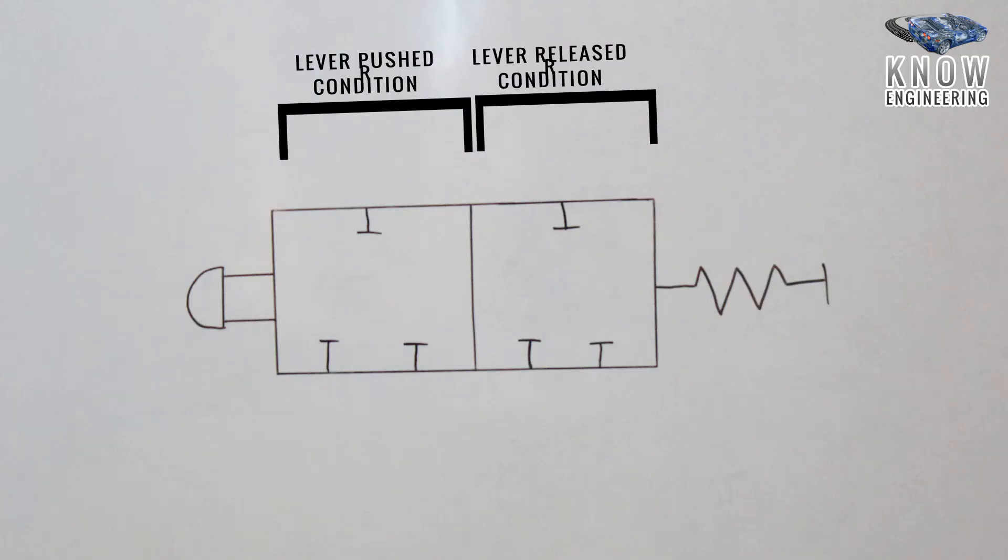Hello everyone, this is Prashant, and today I'm going to explain a particular valve, that is a 3x2 control valve. These are used in controlling the direction, and in application these are used in pneumatic cylinders.